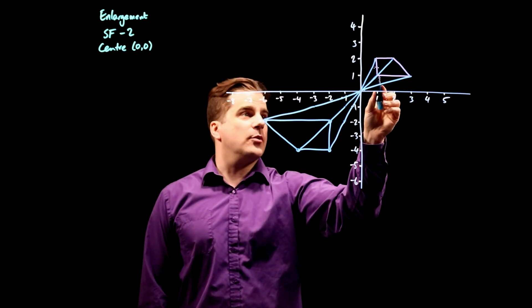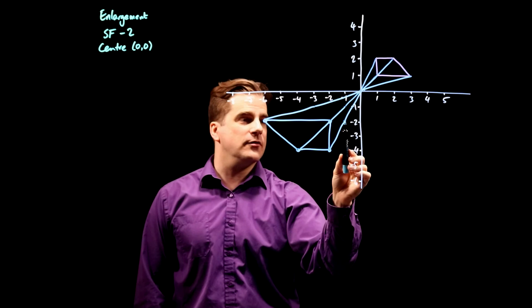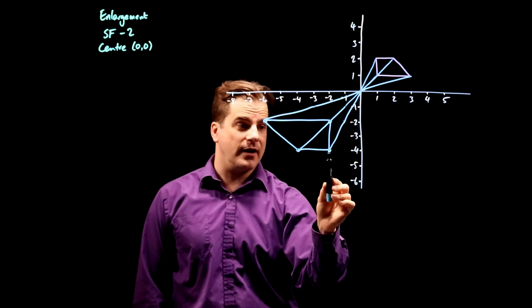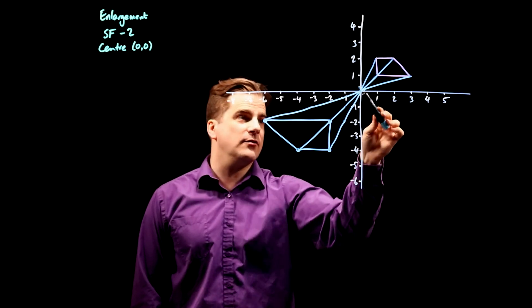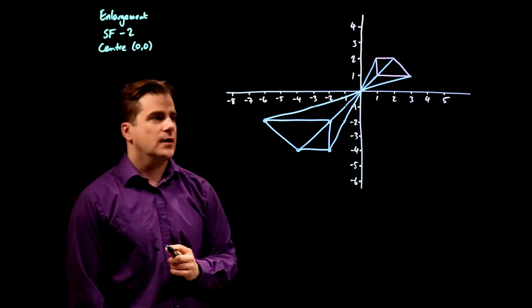You can say, take that point there. It's one long, two up. So this one's going to be one long, two down, and then one long and two down again. It would go to there. And you don't necessarily need to draw this line. It's up to you.